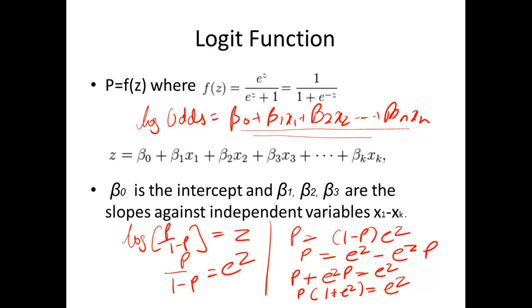And then finally p becomes equal to e raise to power z over 1 plus e raise to power z which is the same as over here, where probability is a function of z, where z is the regression equation or probability is e raise to power z over 1 plus e raise to power z. We can also multiply by e raise to power z on both the numerator and denominator which becomes 1 over 1 plus e raise to power minus z. Both of these two terms essentially mean the same thing.